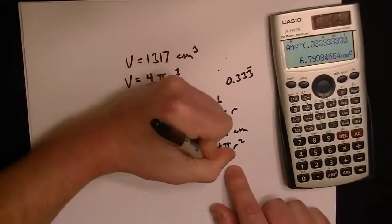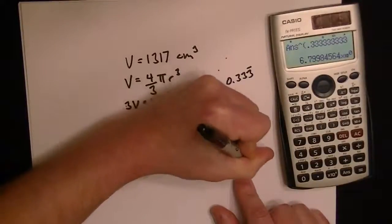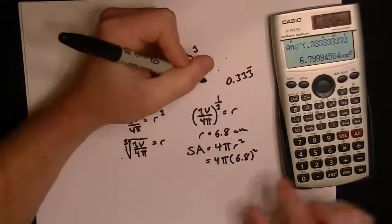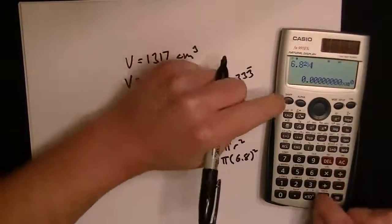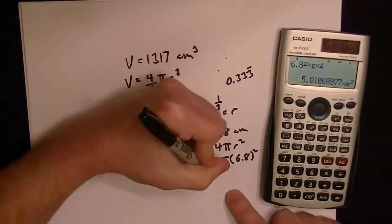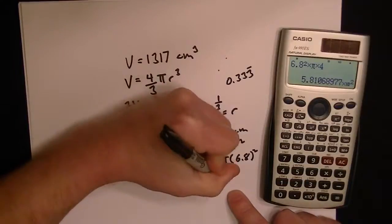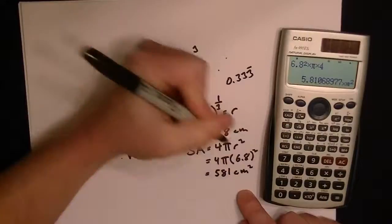We've got our r, so we just fill in the r, 6.8 squared. If we do 6.8 squared times pi times 4, that will give us the surface area. My calculator says it's 581 centimeters squared.